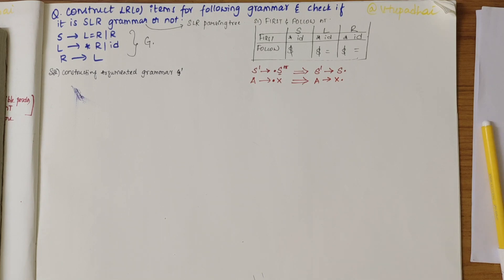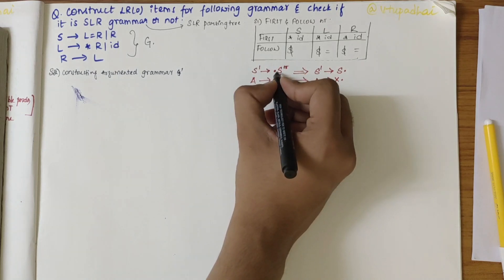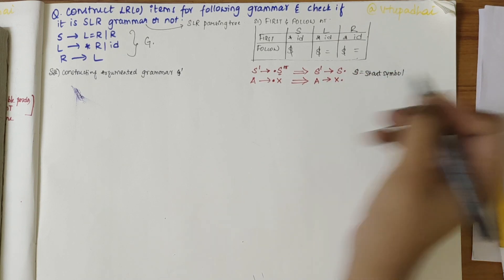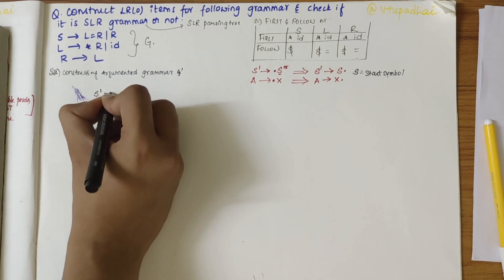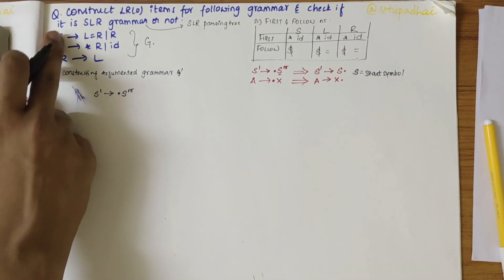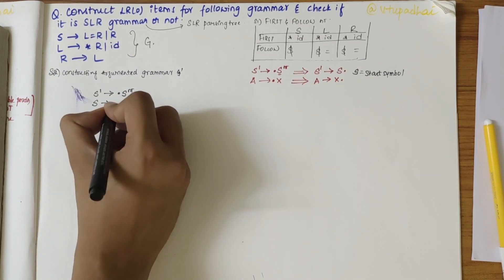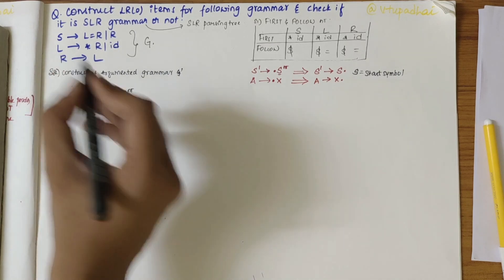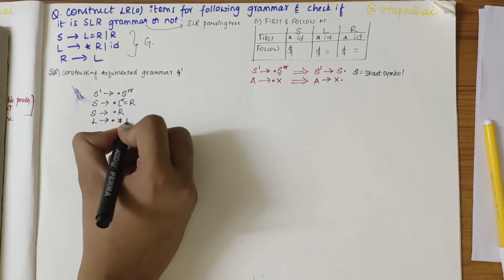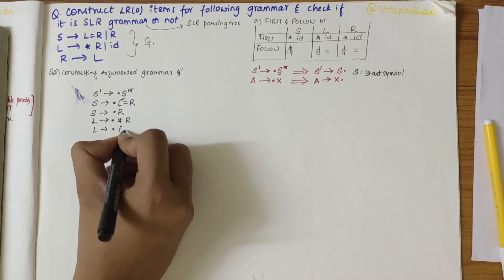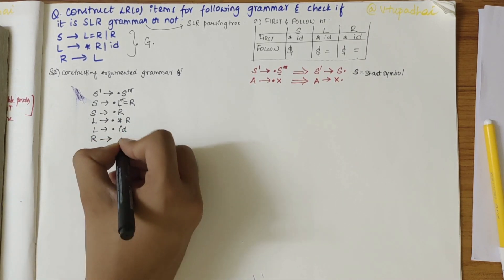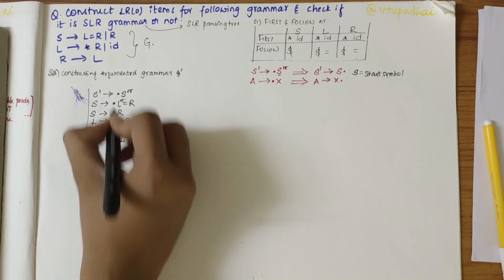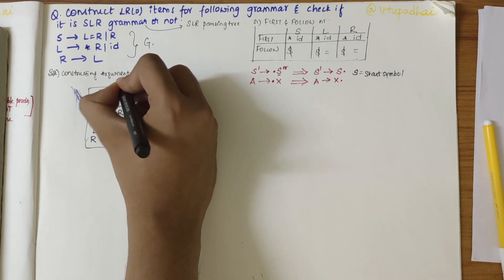Let me start with the I0 productions. First, S' derives dot S. S is the start symbol, so I start from the start symbol itself. S being a non-terminal, I write all possible productions: S derives dot L equals R, and S derives dot R. L being a non-terminal, I add L derives dot star R and L derives dot ID. R being a non-terminal, I write all productions of R with a dot at the start. I have obtained the I0 items, so let me put this in a box and write I0.